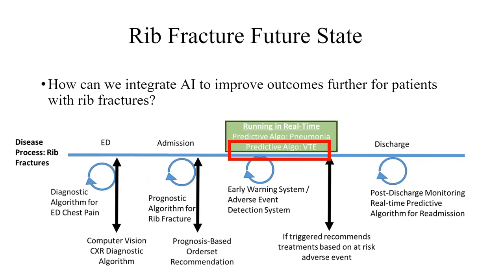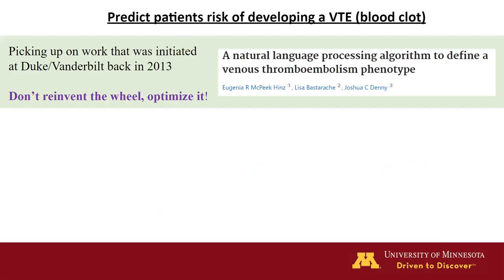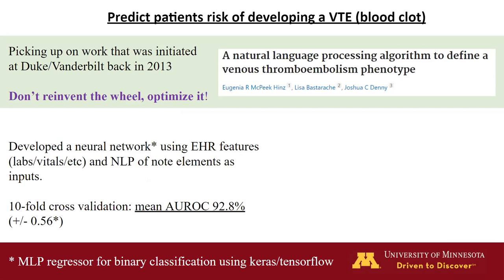Another algorithm we're building is a predictive algorithm to identify who's developed a blood clot — a VTE — currently being externally validated by Duke University. Duke and Vanderbilt previously published an NLP algorithm to identify VTE phenotypes — deep venous thrombosis or pulmonary embolism. One theme is don't reinvent the wheel. We built on their lexicon and developed a neural network using EHR features — labs, vitals — as well as NLP of the notes, achieving an AUROC of about 92.8%. You can see the precision, recall, and F1 scores for that model.